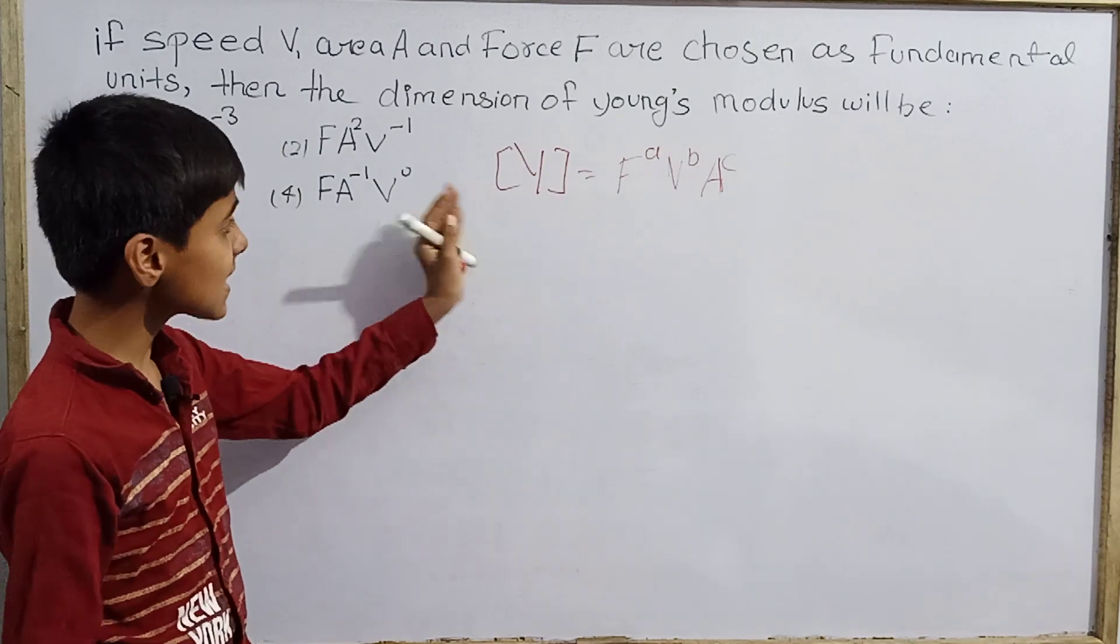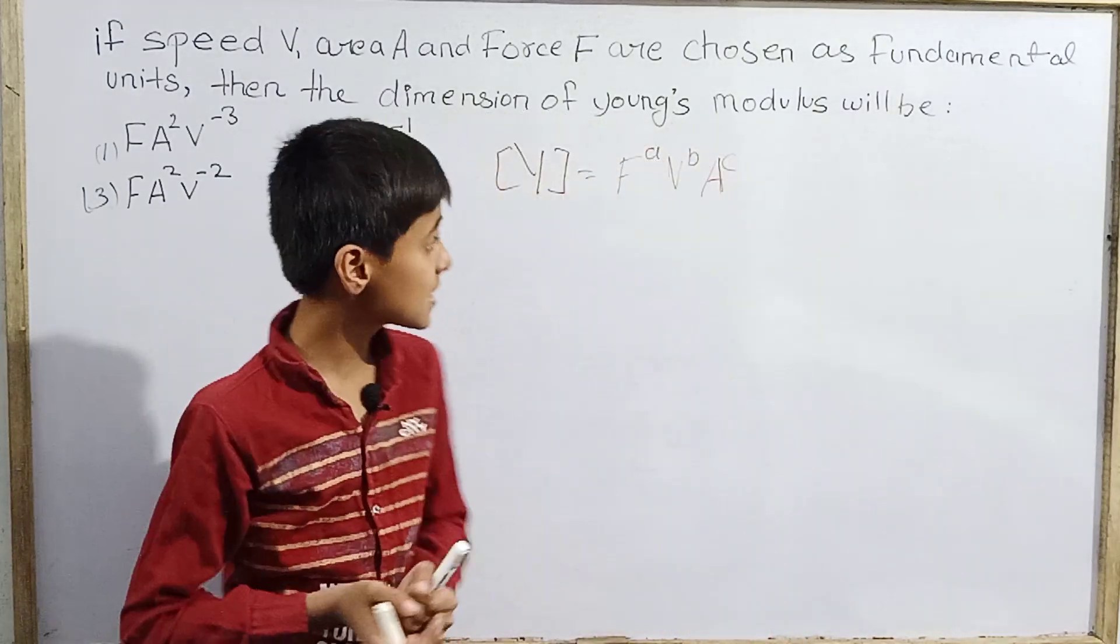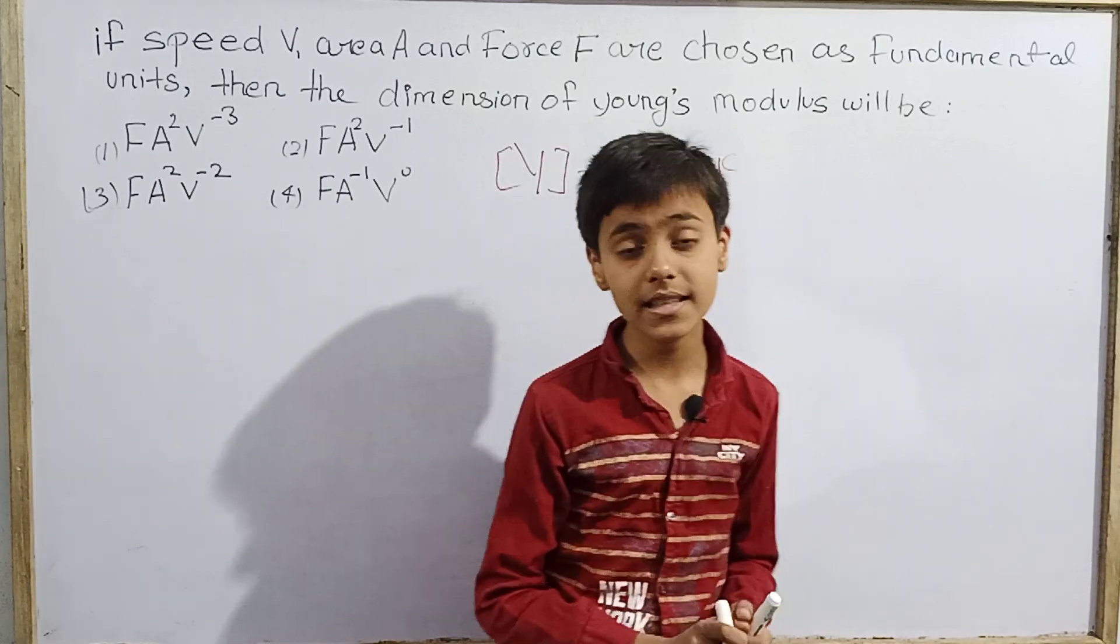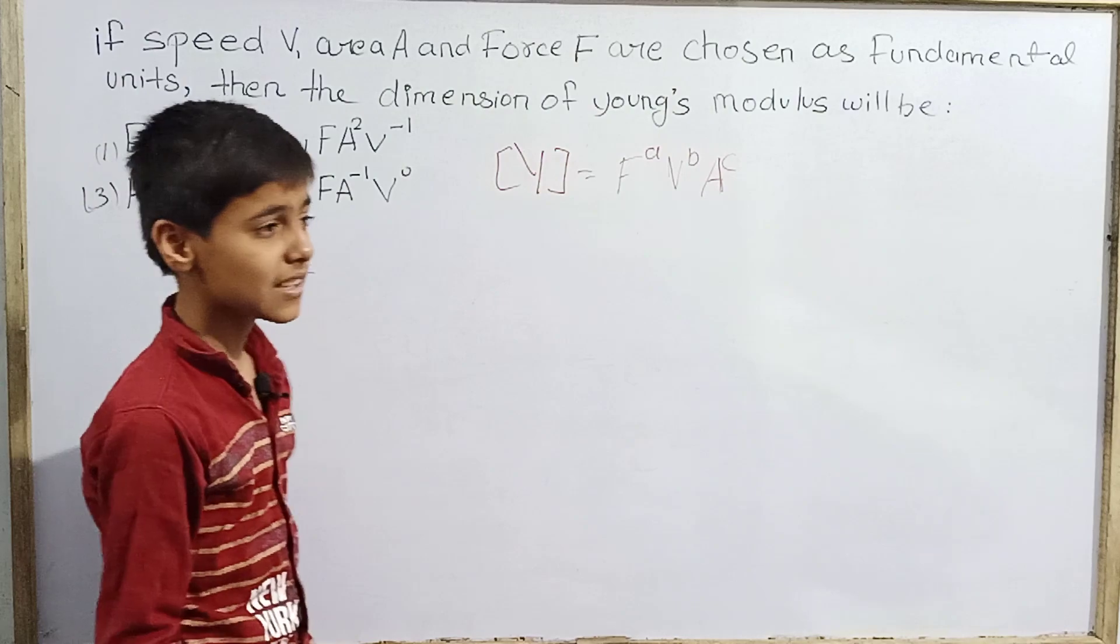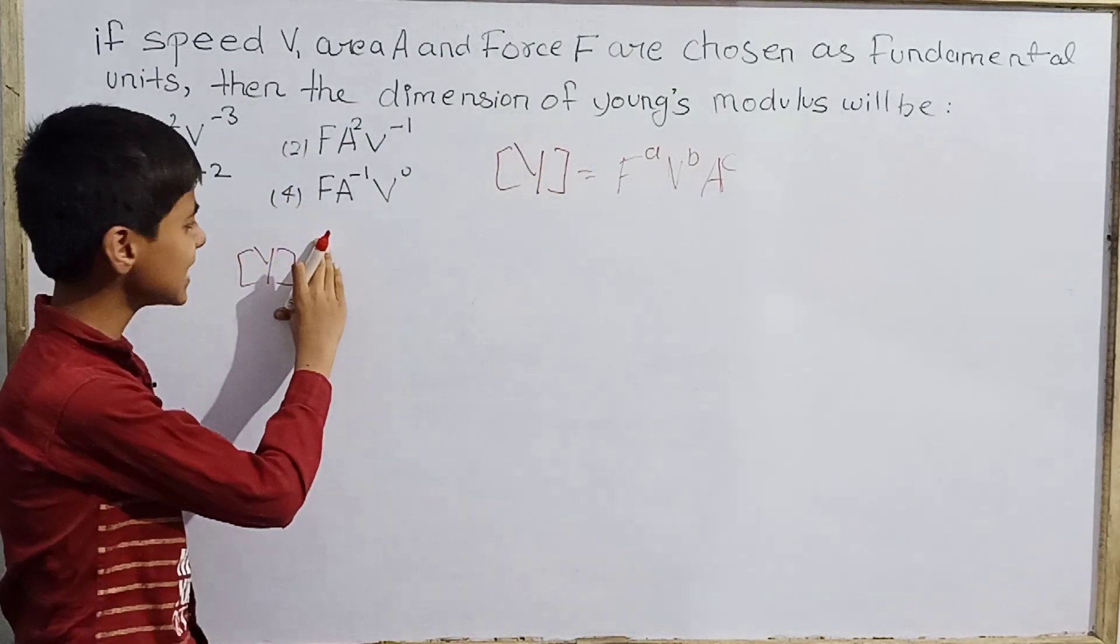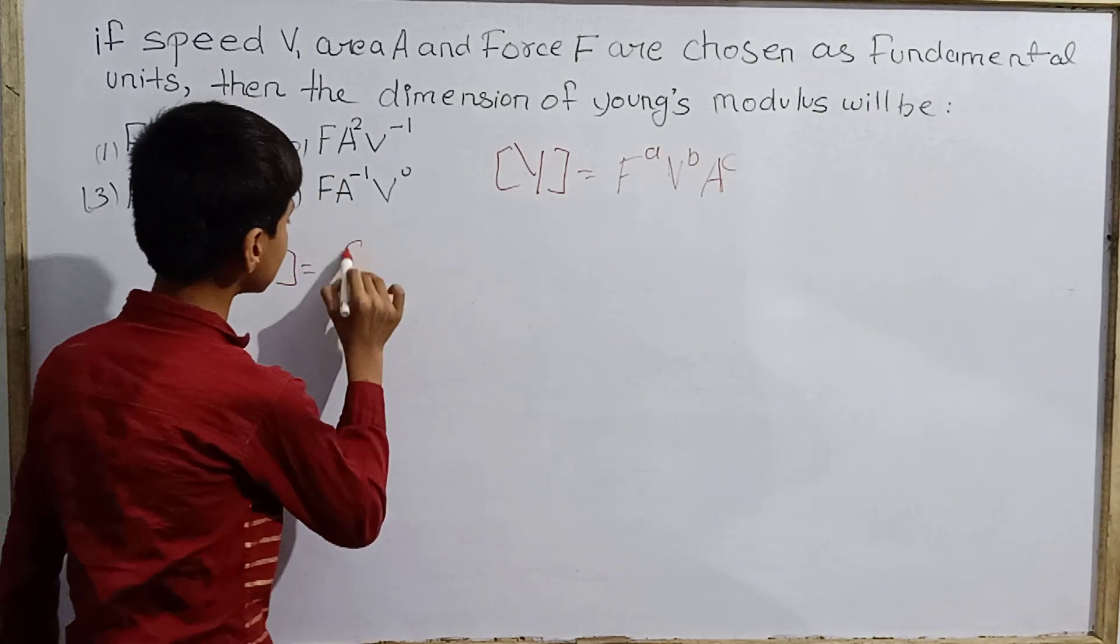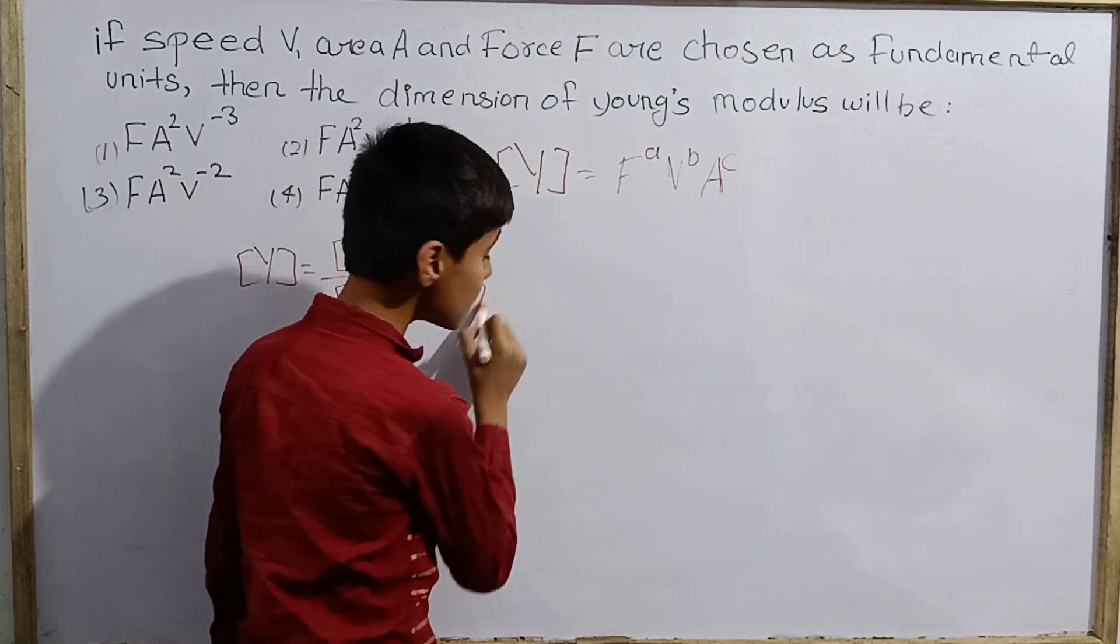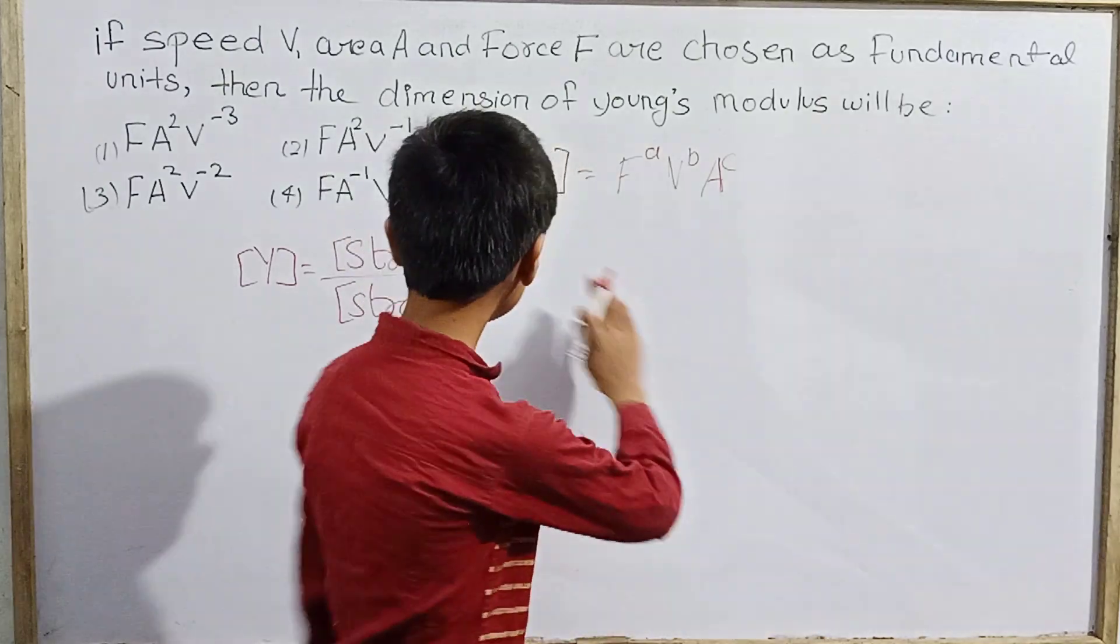If this is the case, initially we will have the original dimensional formula in comparison to original fundamental units. So first of all, we consider to find out what Young's modulus is. It's a long formula but not necessary because this is also a modulus of elasticity. Whether it is shear modulus or bulk modulus or modulus of rigidity, all the modulus of elasticity can be written as stress by strain. Stress by strain. But originally it is stress by strain, and strain is a dimensionless quantity, so let's remove it.